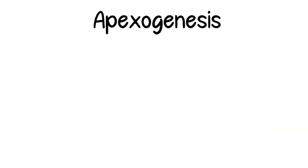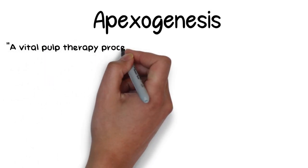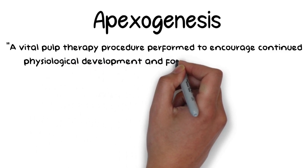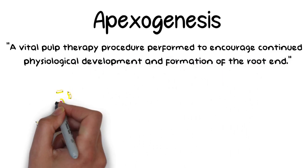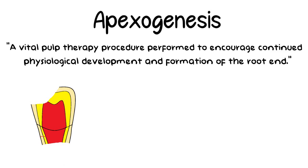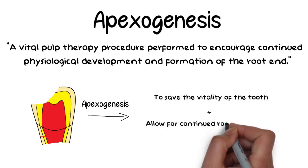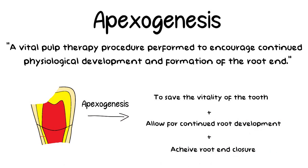Apexogenesis in the tenth edition of Glossary of Endodontics is defined as a vital pulp therapy procedure performed to encourage continued physiological development and formation of the root end. The objective of Apexogenesis is to maintain the vitality of the radicular pulp after a pulp exposure has occurred so that the root can continue developing and the apical closure can be achieved.